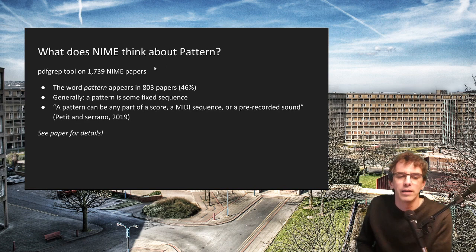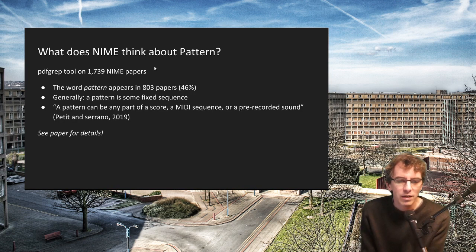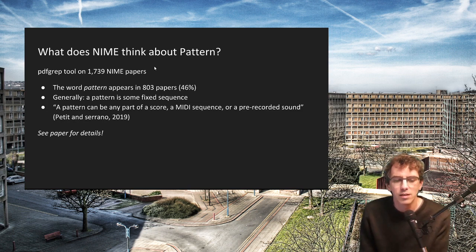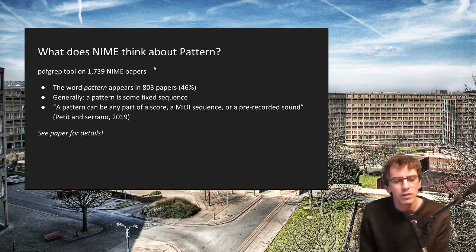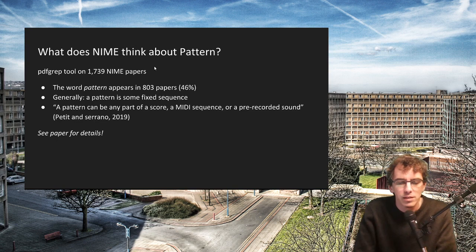But what does KNIME think pattern is? I had a look — I could download all of the KNIME papers, which is great, thanks to the organisers for making them all available and open. Generally, I found that KNIME researchers use the word pattern to describe some fixed, usually discrete, sequence. It's used a lot — nearly half of the papers use the word — but the only definition I actually found was: a pattern can be any part of a score, a MIDI sequence, or pre-recorded sound. So basically almost anything.